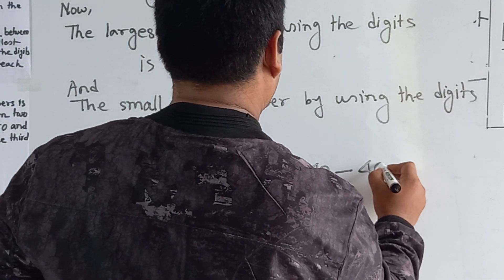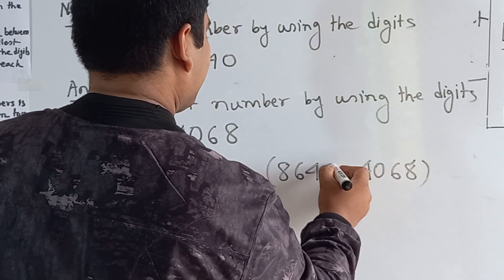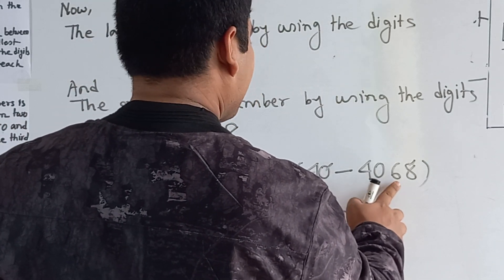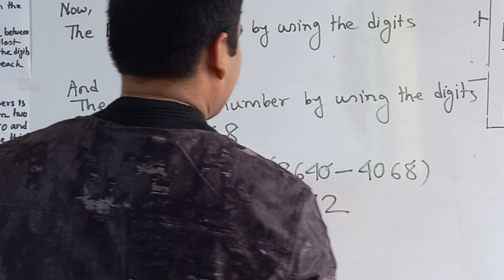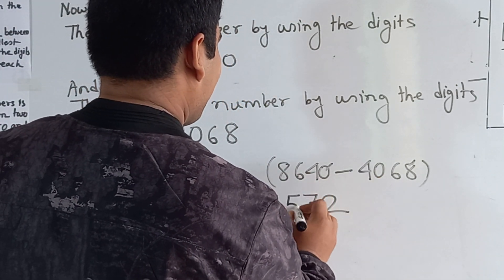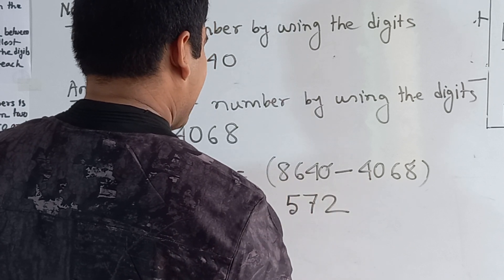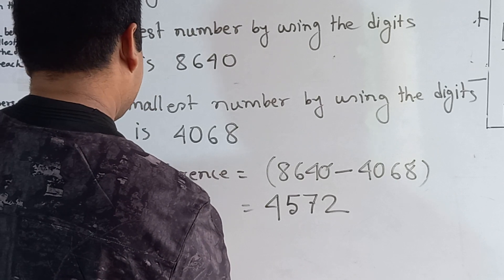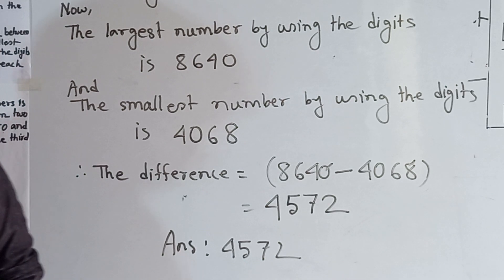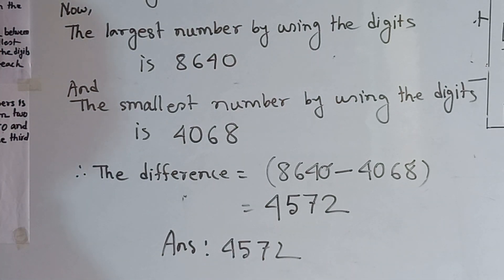Therefore the difference equals 8640 minus 4068. 8 to 10 needs carrying — that 1 is added with 6 to make 7; 7 to 14 gives 7, carry 1; that 1 added with 0 makes 1; 1 to 6 needs 5; and 4 to 8 needs 4. So the answer is 4572. That is the difference between the largest and the smallest number formed by the given digits.